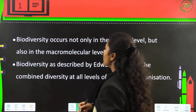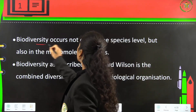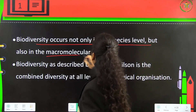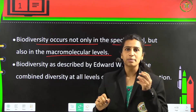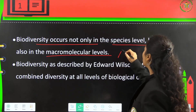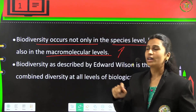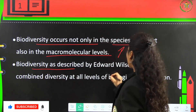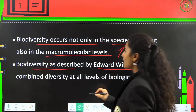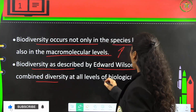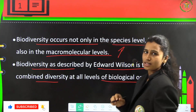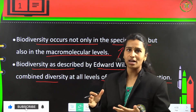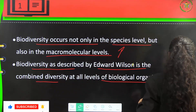Biodiversity occurs not only at the species level, but also at the macromolecular levels. So even at the higher stages of life, biodiversity is going to exist. Biodiversity, as described by Edward Wilson, is a combined diversity at all the levels of biological organization.